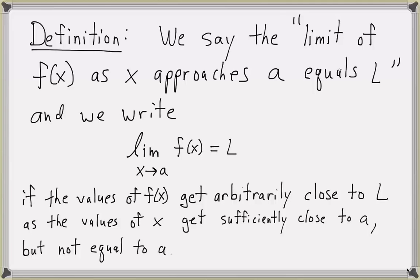This definition does not imply that x is approaching a from any particular direction, so you actually have to consider both directions. This definition could also be called a two-sided limit — you have to worry about the function's values as x approaches a from the left and from the right. So now we're going to extend this to looking at the function's values as x approaches a from only one side. These are called one-sided limits.